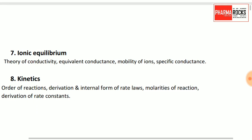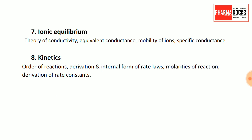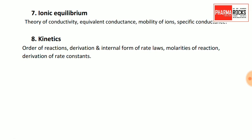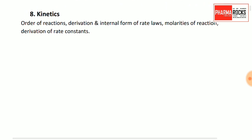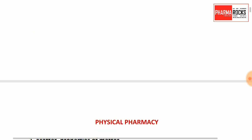In ionic equilibrium, the theory of conductivity, equivalent conductors, and mobility of ions are important. Next is kinetic study — order of reactions, derivation and integral forms of rate laws, and derivation of rate constants. This completes the physical chemistry subject.